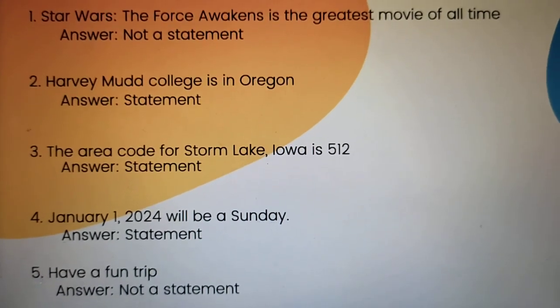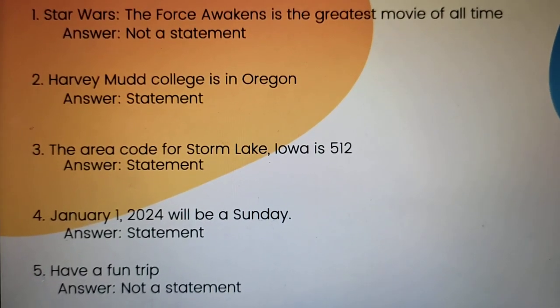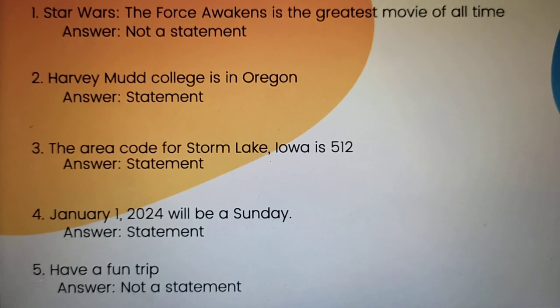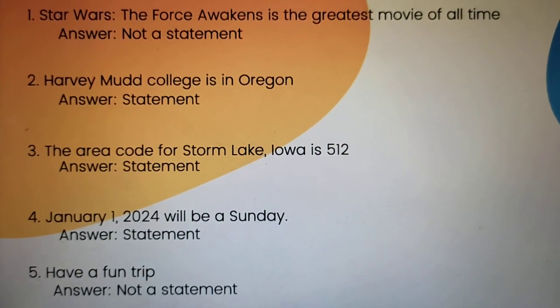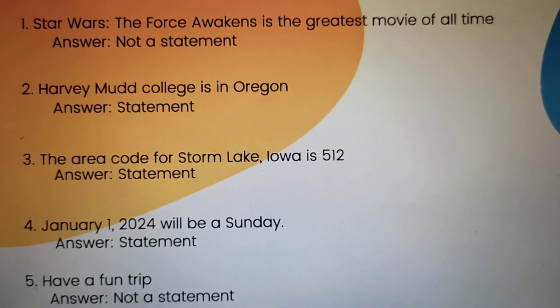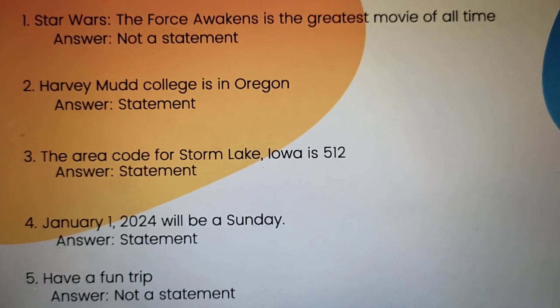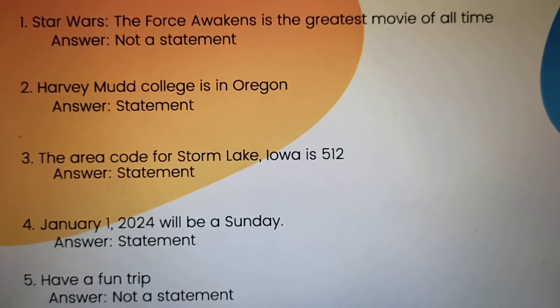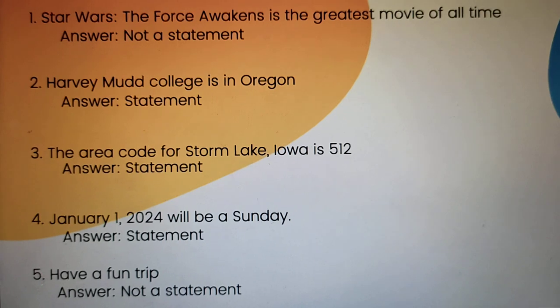Number 4: 'January 1, 2024 will be a Sunday.' It is a declarative sentence and it is a false statement because January 1, 2024 is not a Sunday.